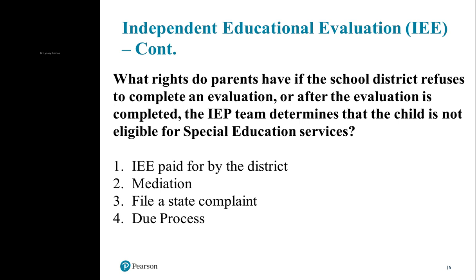With mediation, the district has a plan for conducting it, allowing parents and the school to both explain their position to someone unbiased, helping both parties agree on a legally binding solution — paid for by the state education agency. With due process, the parents pay for an attorney and a hearing officer makes the final determination. The school must show its evaluation was right for that child; if it can't, the hearing officer decides the school has to pay for an IEE. If parents still disagree, it may proceed with a civil suit.